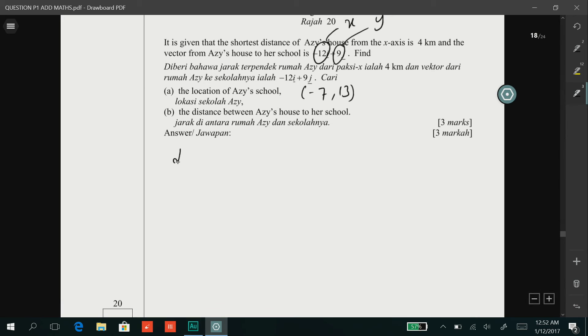Which is distance or hypotenuse is equal to (-12)² + 9². Of which you should get √225 and the answer here is 15 km.